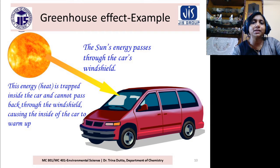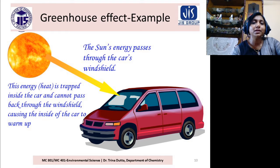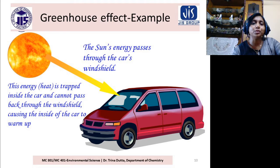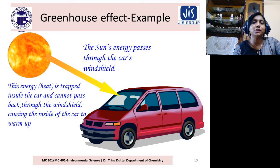The sun energy can pass through the windshield, as it is of shorter wavelength. But this energy cannot go outside, being of longer wavelength. So it will remain trapped inside the car, and you have the practical experience that inside the car you feel warmer than outside. This is also an example of the Greenhouse Effect phenomenon.